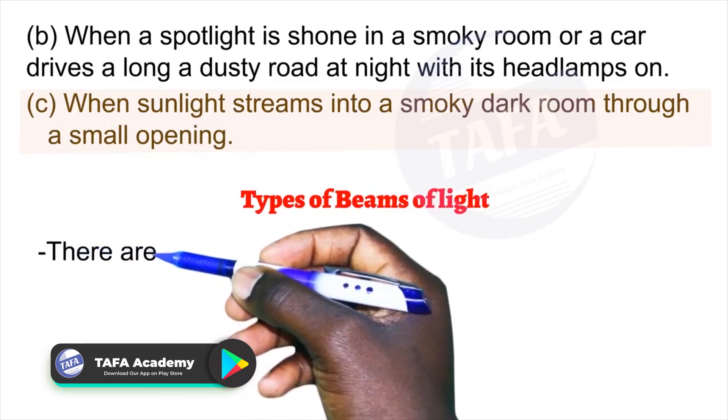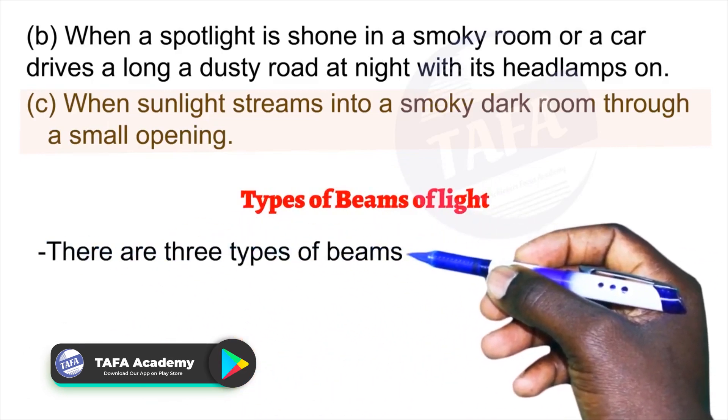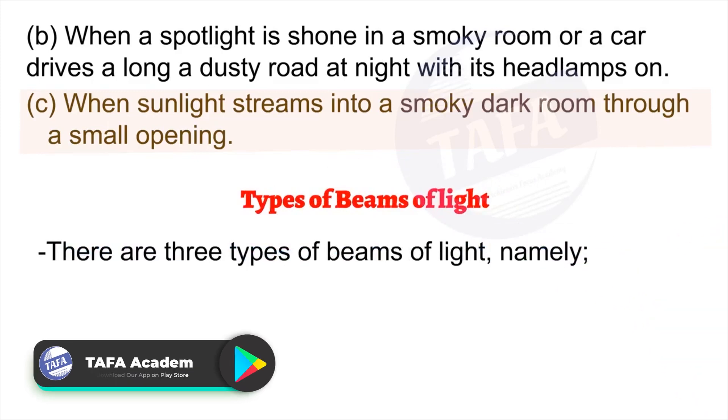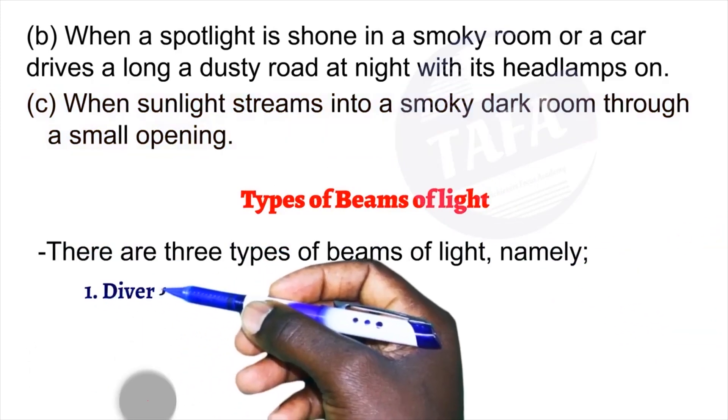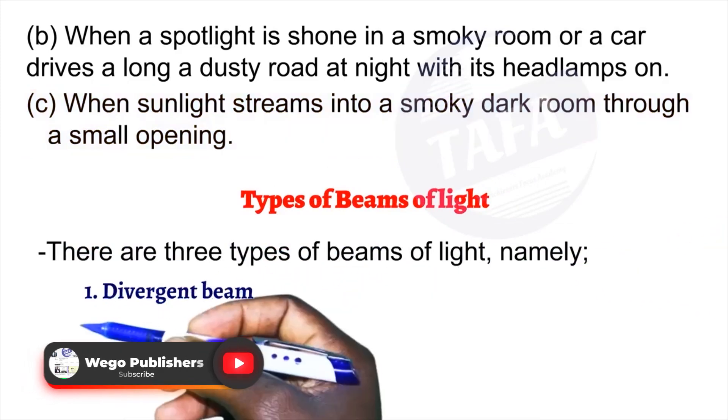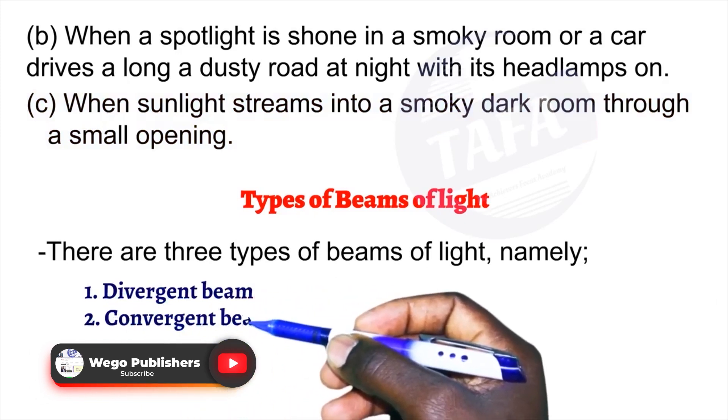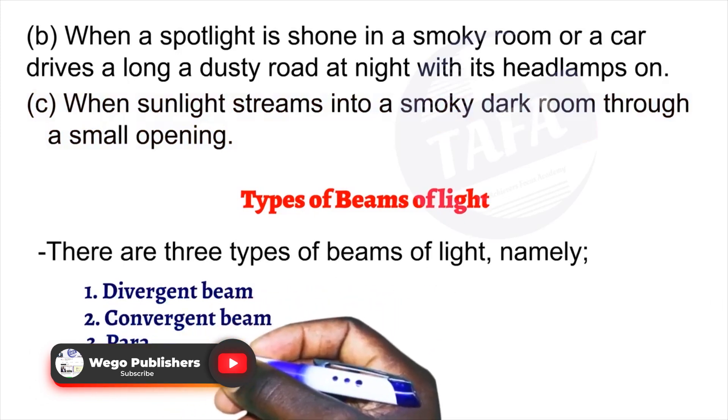There are three types of beams of light: namely, divergent beam, convergent beam, and parallel beam.